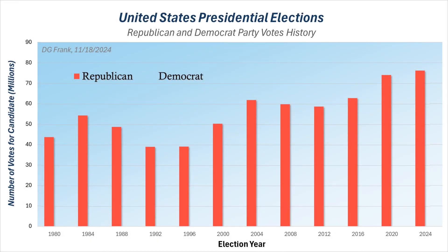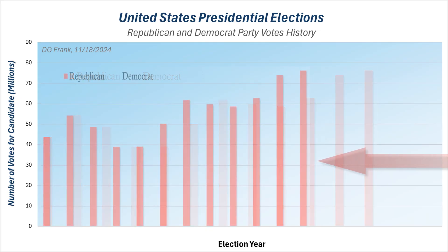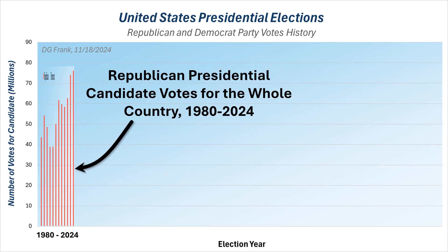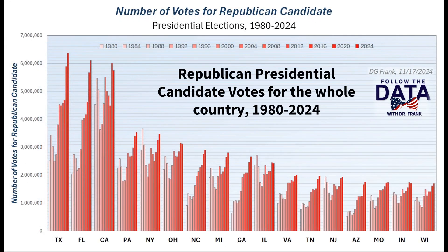In the first graph, I showed the millions of votes received nationally by the Republican candidate in each general election since 1980, represented by the vertical red bars. Now I'm going to do something a little tricky, so pay close attention. I'm going to squeeze all of those bars to the left so that the entire 44-year history is illustrated by this one set of 12 bars. Note that the leftmost bar still shows the turnout for the Republican candidate in 1980, and the rightmost bar still shows the turnout for the 2024 election. I've done this squeeze because now I'm going to show you sets of 12 bars for those elections for every state in the country.